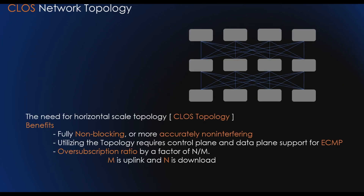A common design for horizontally scalable topology in large data centers is the folded Clos topology, sometimes called fat tree. Key properties include: the topology is fully non-blocking, or more accurately non-interfering; it requires control plane and data plane support for ECMP; and it addresses the oversubscription ratio by the factor of n/m, where m is the uplink and n is the downlink.